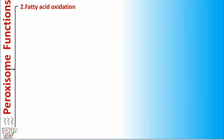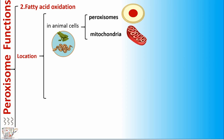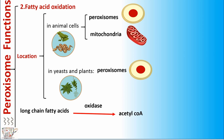Function number two: fatty acid oxidation. Fatty acid oxidation in animal cells occurs in proxysomes and mitochondria, but in yeast and plants it occurs in the proxysome only. In fatty acid oxidation, long-chain fatty acids are converted by oxidase to acetyl-CoA. The process is called beta oxidation.